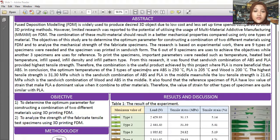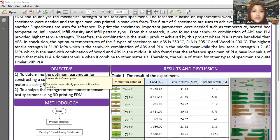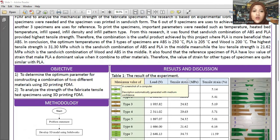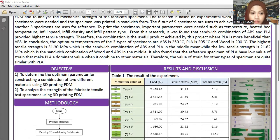Moving to the objectives section. The first objective is to determine the optimal parameters, including temperature (the most important), infill speed, infill density, and infill pattern. The second objective is to analyze the mechanical strength using tensile testing.